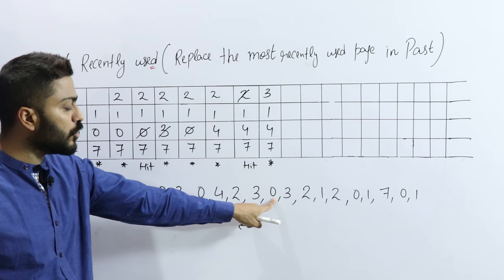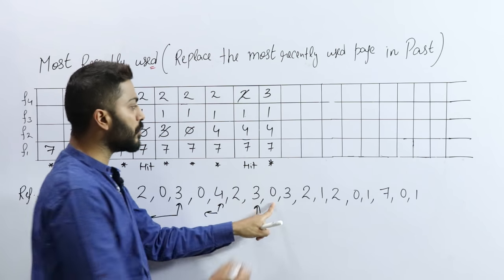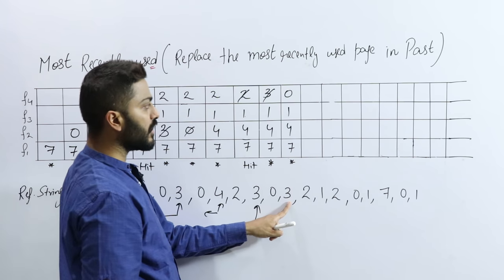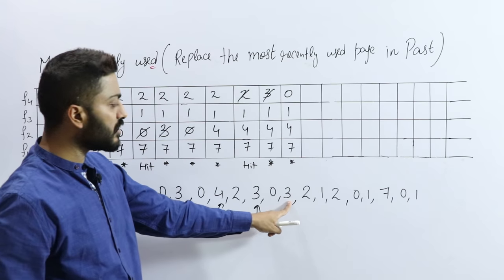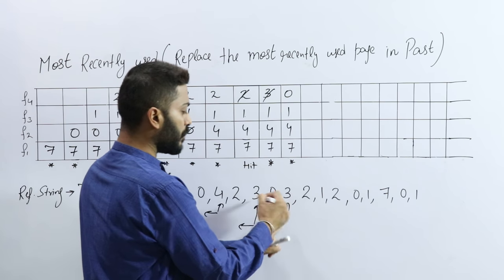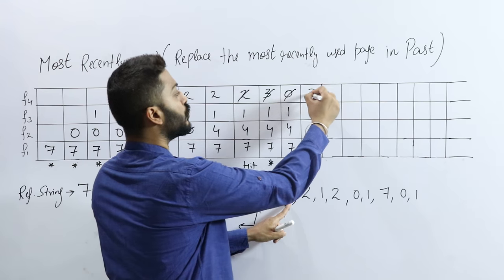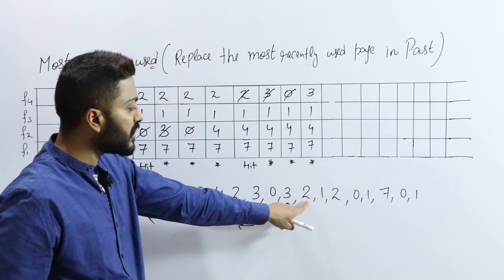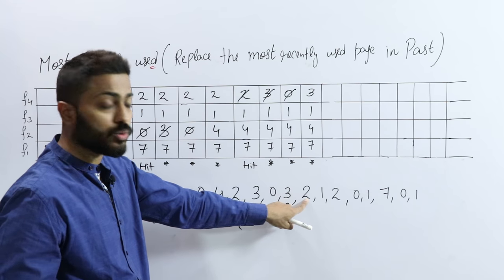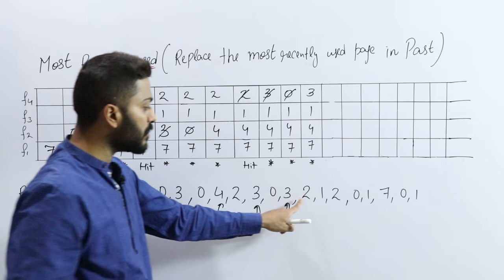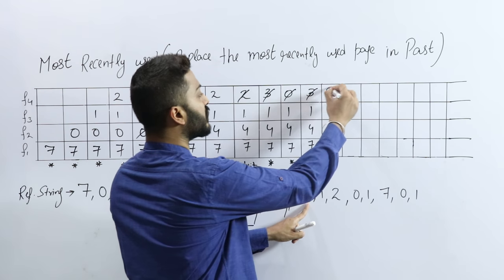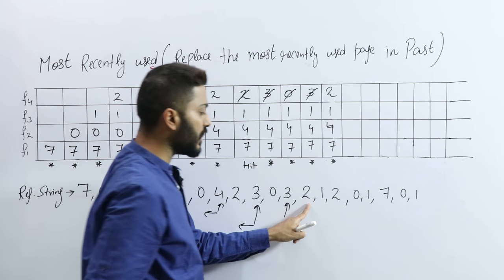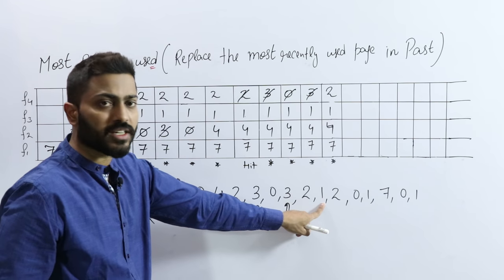Then 0 — is 0 present? No. So again we replace 3 with 0 — that is a fault. Then 3 — is 3 present? No, 3 is again absent. The page used just before 3 was 0, so 0 is replaced again — that is a page fault. Next, page number 2 — is page number 2 present? No. So we replace 3 with 2 — that is again a page fault.